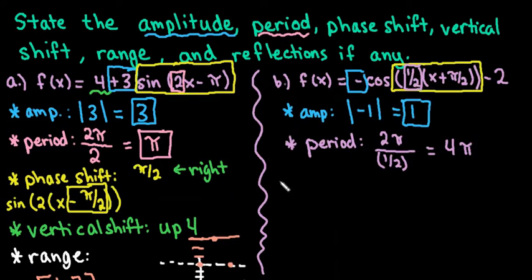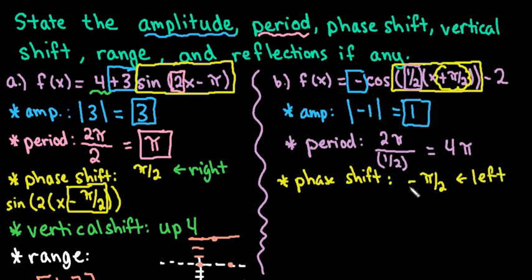The next one that we're going to talk about is the phase shift. Remember, I said that the inside part has to be in factored form. It's already been factored. The 1/2 has been taken out. So we would look at this part right here and do the opposite. For this one, it's going to end up being negative π/2, or you could say that it's going to the left π/2, however it makes the most sense to you. If you're entering this into an online platform, then you would just put the negative π/2.